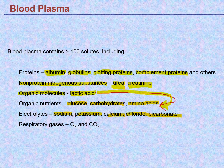Finally, blood plasma carries dissolved respiratory gases: oxygen picked up in the lungs and delivered to cells, and CO2 picked up from cells and delivered to the lungs to be eliminated.